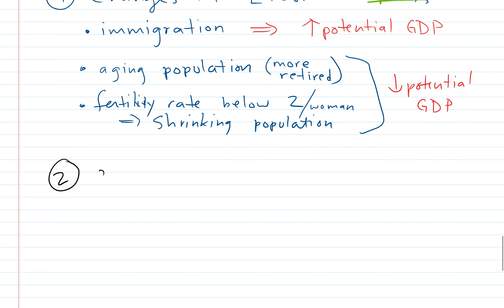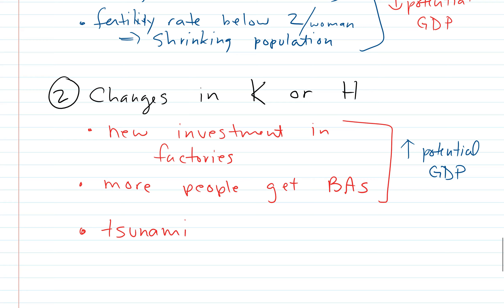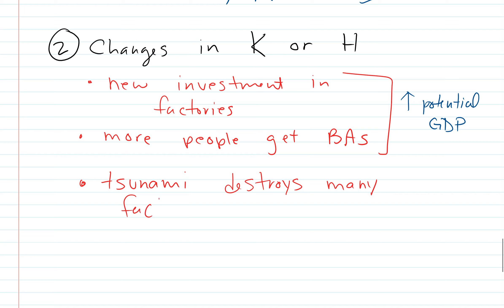Let's go to the second one, changes in K or H together because they're both a kind of investment in the future. If we have new investment in factories, we have more people go to college and get their bachelors. These would be both examples of something that's going to increase potential GDP. To give an example of something that would decrease potential GDP, a tsunami destroys many factories, maybe like a whole region of the country.